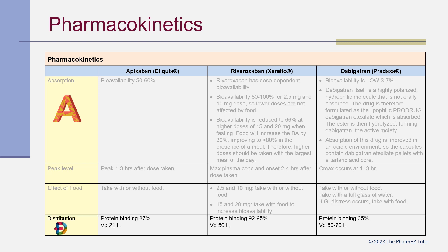Regarding distribution: apixaban and rivaroxaban have very high protein binding of about 90%, whereas dabigatran has moderate protein binding of 35%. The volume of distribution for these DOACs ranges from about 20 to 50 liters.